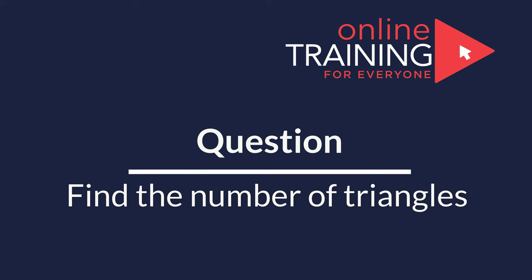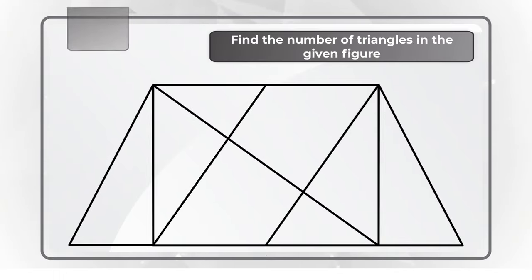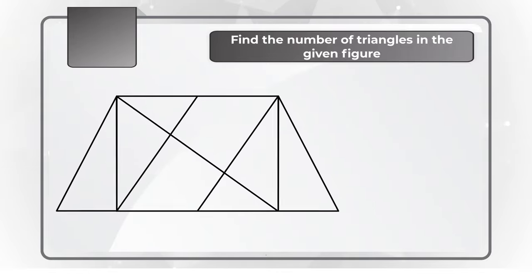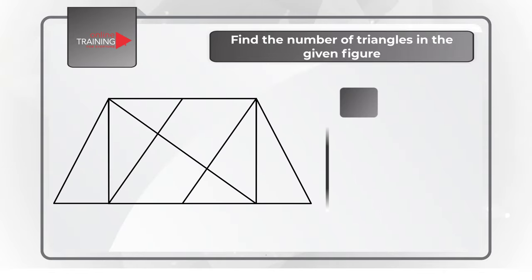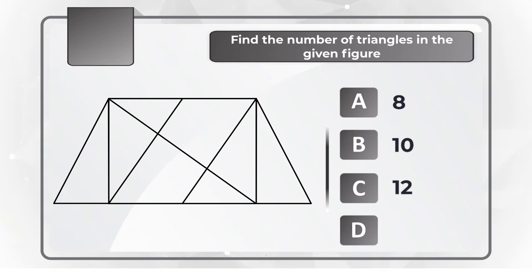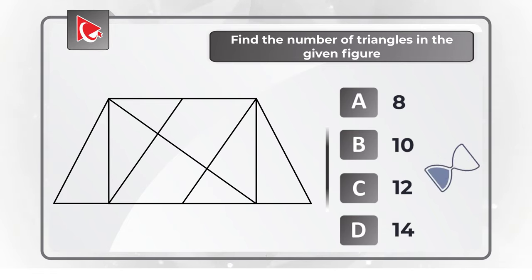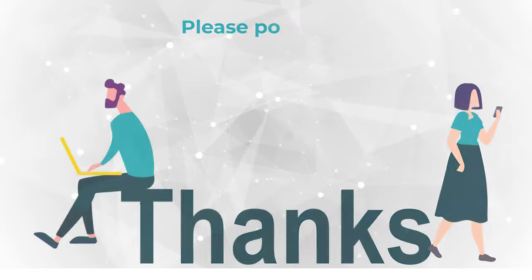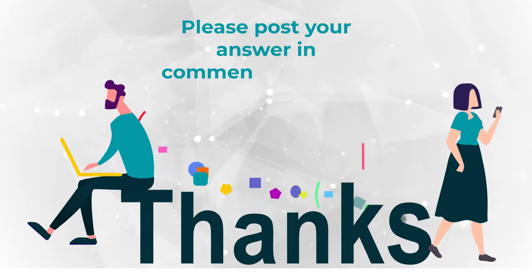And now here is a question for you to practice your skills — you need to determine how many triangles are shown on the screen. You have four different choices: A. 8, B. 10, C. 12, and D. 14. Feel free to pause this video to calculate the right answer, and make sure to post your solution in comments so I can give you my feedback. Thanks for participating and good luck!